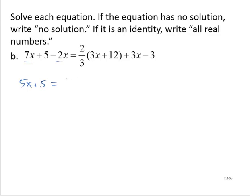On the right hand side, I'll apply the distributive property. So 2 thirds of 3x is 2x. 2 thirds times 12 is 8. And I have a plus 3x and a minus 3. Continuing to simplify on the right hand side, I would have 2x plus 3x is 5x plus 8 minus 3 is a plus 5.